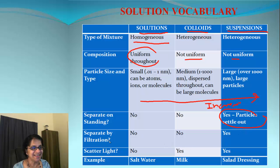About separating, only suspensions can be separated by standing. What about the filtration method? That only works for suspensions. You cannot separate the components of solutions and colloids by filtration. How about scattering of light? Both colloids and suspensions can scatter light. Solutions are the only one which will not scatter the light. Here are some examples: simple salt water or sugar water is a solution which is clear and uniform, milk is a colloid, and any salad dressing like Italian salad dressing will be like a suspension.